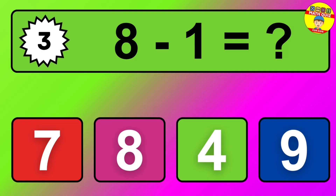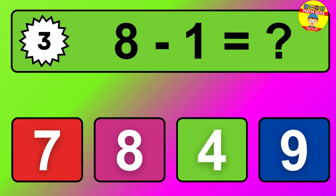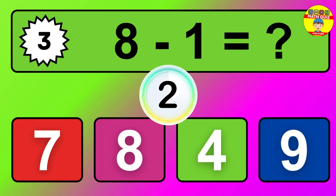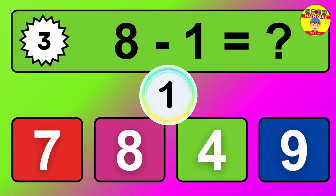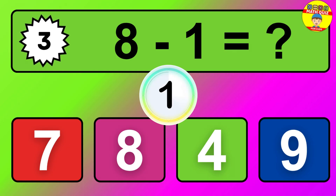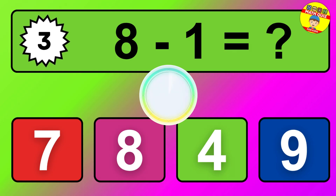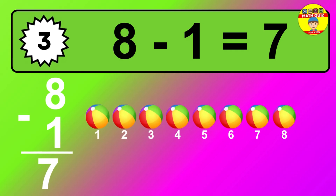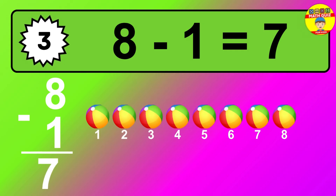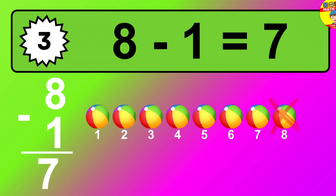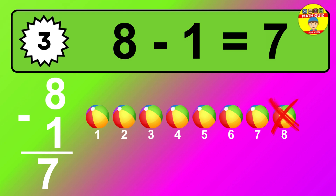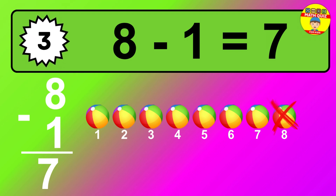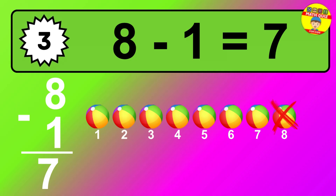Question 3. 8 minus 1 equals what? The answer is 8 minus 1 is 7. Let's count it: 1, 2, 3, 4, 5, 6, 7.